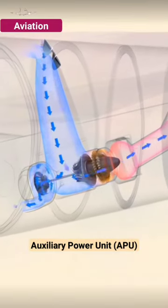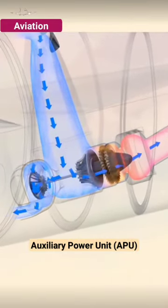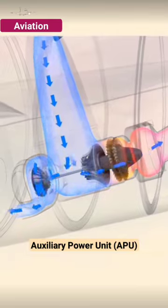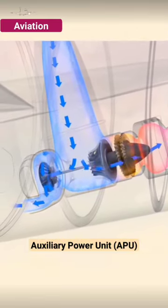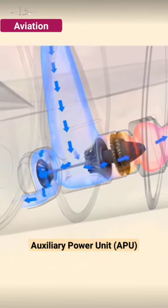The APU itself is a gas generator that runs on principles similar to the core of a jet engine. The APU has an electric battery-powered starter.